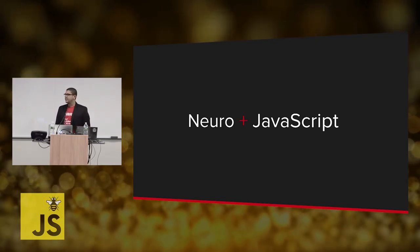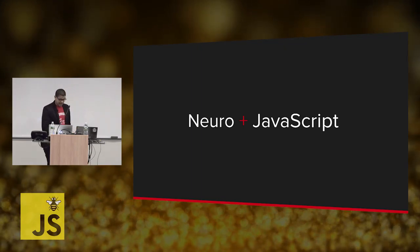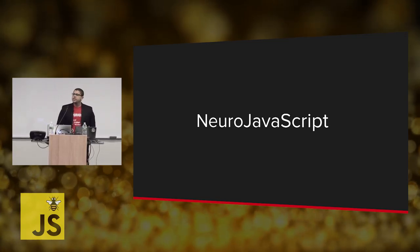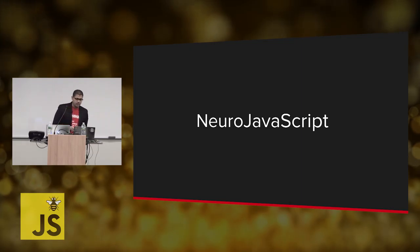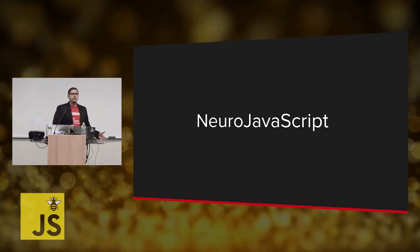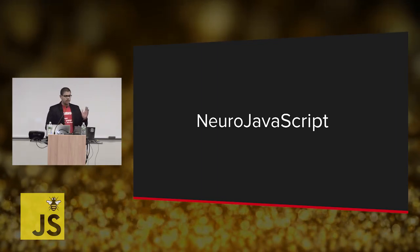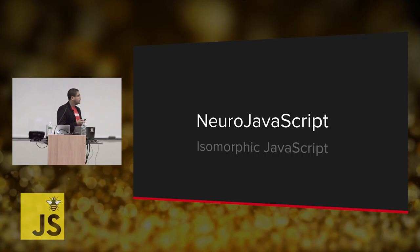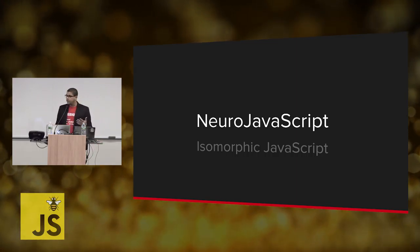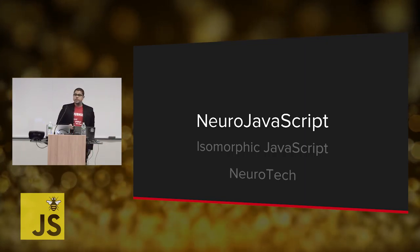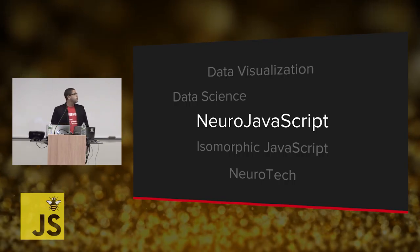So who here has an idea of what that means? Neural JavaScript is a term that I put together — two very common words. It's actually a combination of things. Neural JavaScript involves isomorphic JavaScript, which I'm going to be covering today. It involves neural technology, data science, data visualization, and open source.